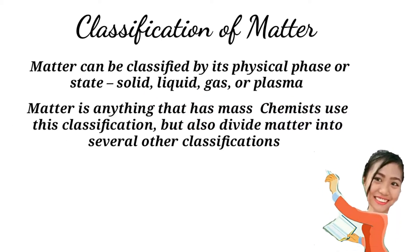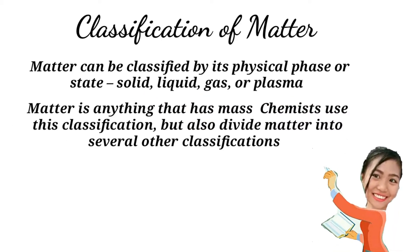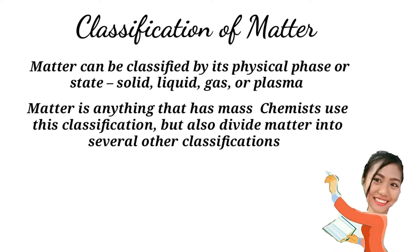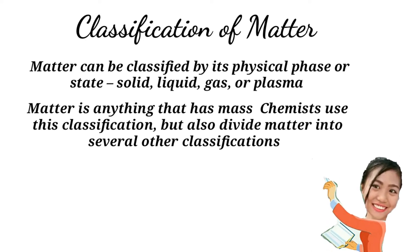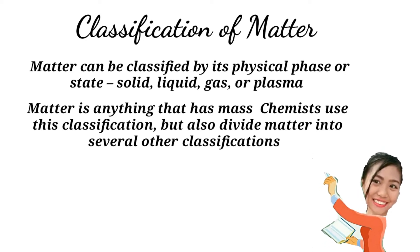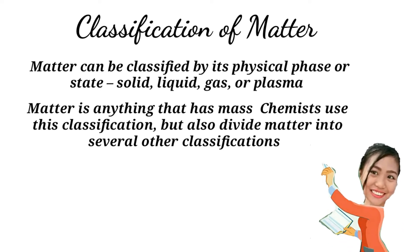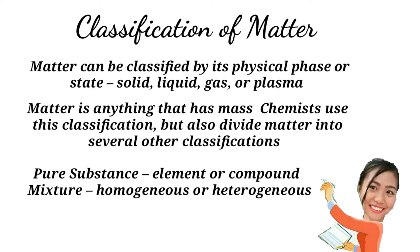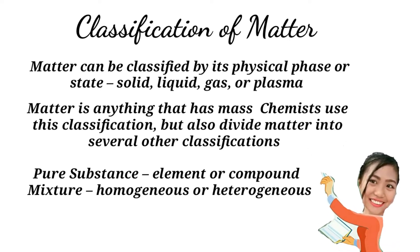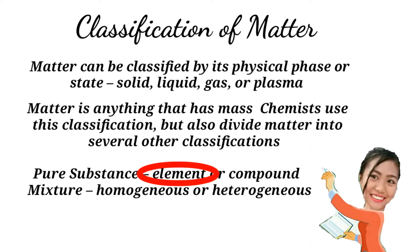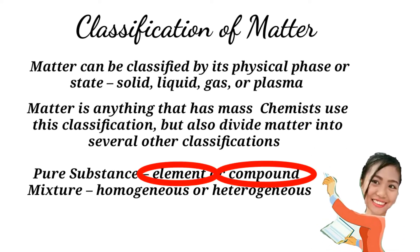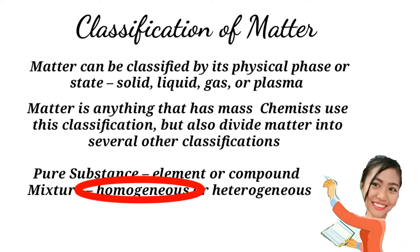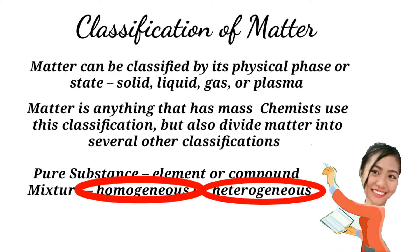Matter is anything that has mass. Chemists use this classification but also divide matter into several other classifications. A pure substance can be an element or a compound, and a mixture can be homogeneous or heterogeneous.